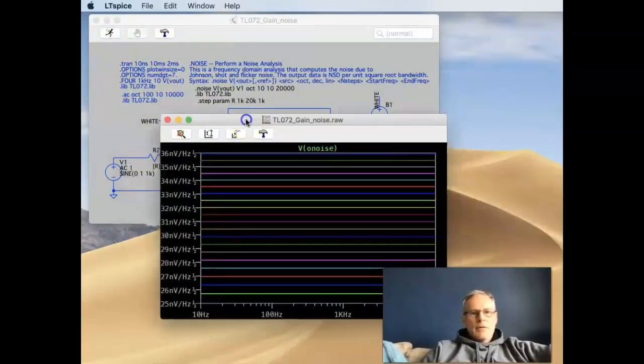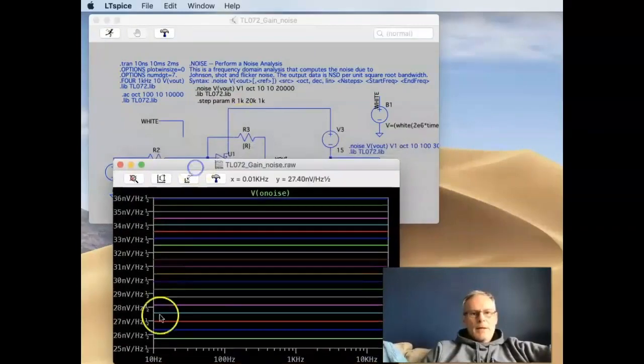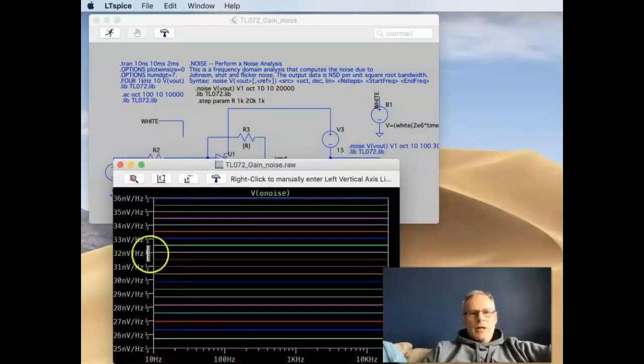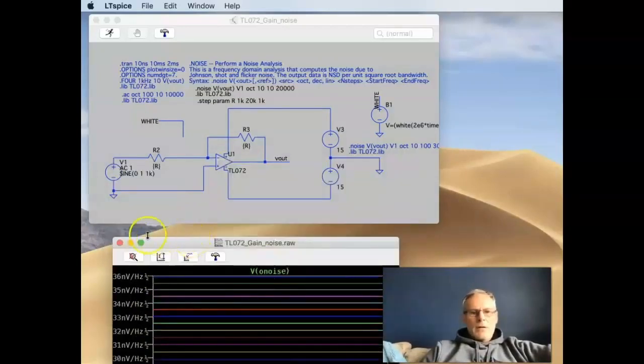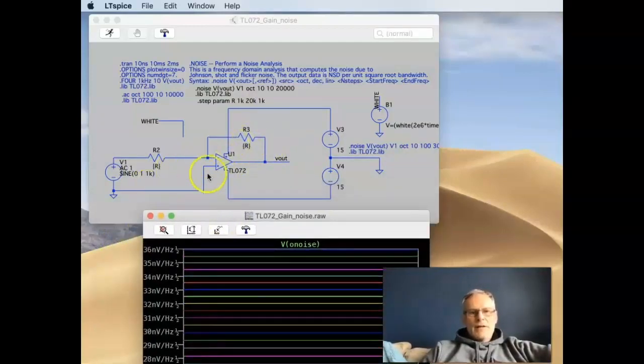And the analysis again. Oops, there we go. You can see that we're back where we were before with 1K. And then we're heading up in terms of noise towards the 36 nanovolt region. So it gives you an indicator of how to measure the effect of these R's.